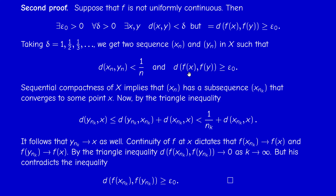But this contradicts the inequality that the distance between f(x_n) and f(y_n) is at least epsilon_0. This concludes the second proof of the uniform continuity theorem, and therefore the whole chapter 3 on compactness. It may be difficult for the first time, so I advise you to watch the video several times, do the exercises, and check the details. If you have questions, don't hesitate to let me know. Thank you for your attention, and see you next time.